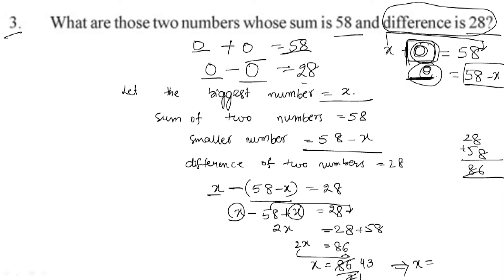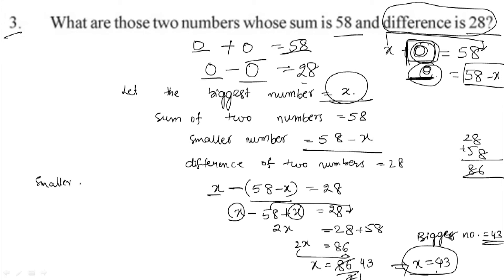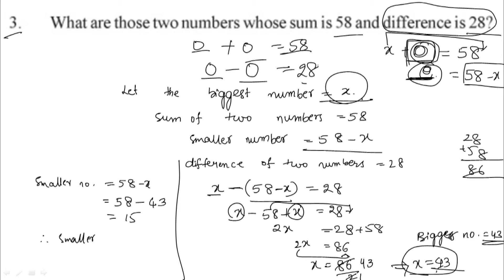x equals 43. Let the bigger number be x, so bigger number is 43. Smaller number is 58 minus x, which is 58 minus 43, equals 15. Therefore, smaller number is 15 and bigger number is 43.